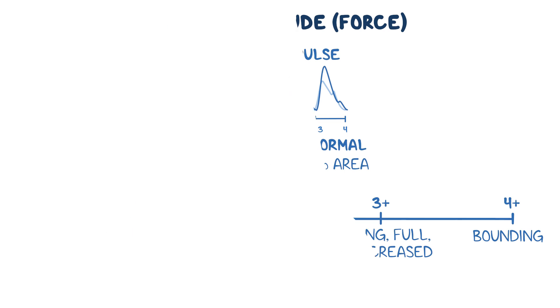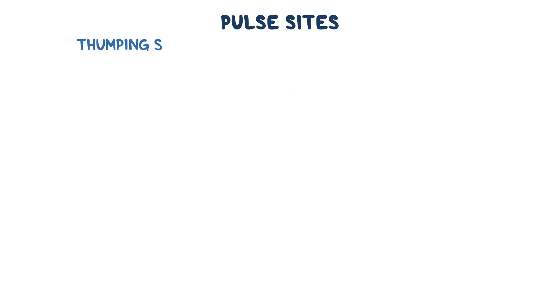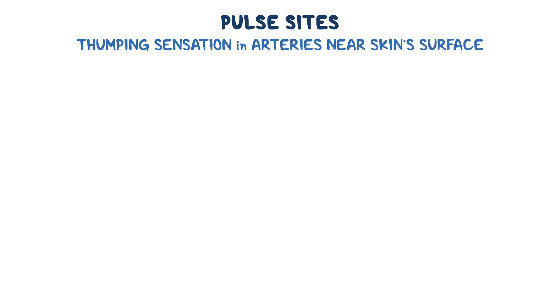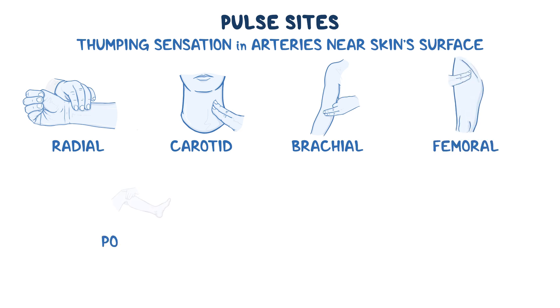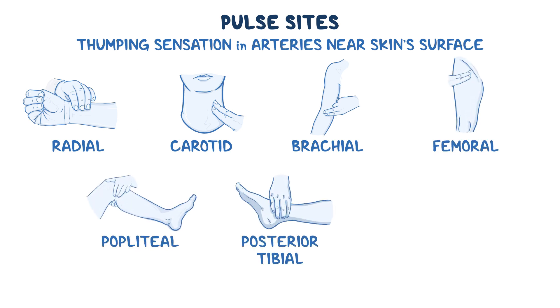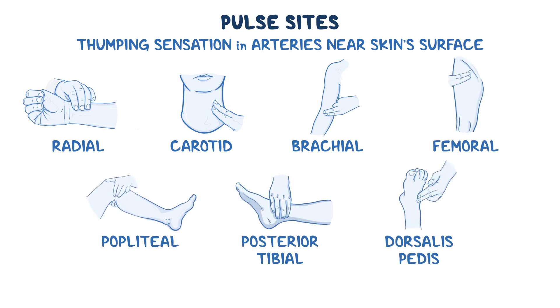The pulse can be felt as a thumping sensation in arteries located near the skin's surface. These include the radial, carotid, brachial, femoral, popliteal, posterior tibial, and dorsalis pedis arteries.